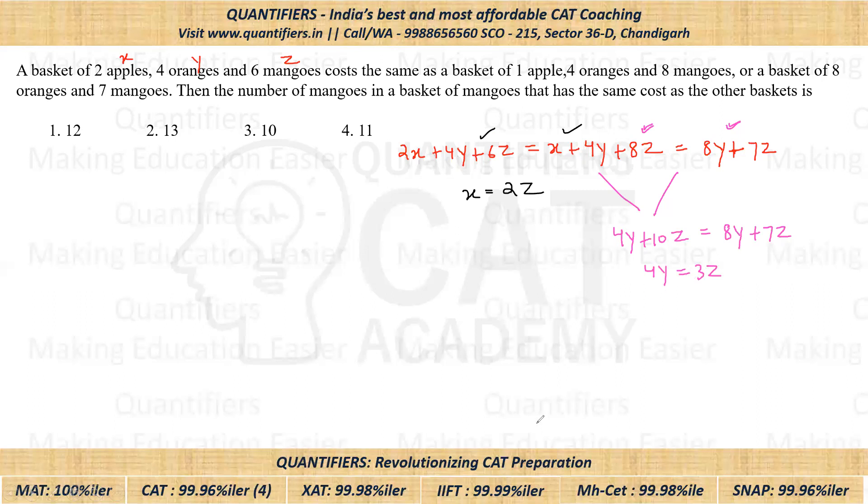Now students, just see here. We have a relation X is equal to two times Z. Here we have a relation four times Y is equal to three times Z. Z is common to both. So let's try to make coefficient of Z same in both the cases. If I want to make the coefficient of Z same in both places, I'll multiply this by three, and I'll multiply this complete equation by two.